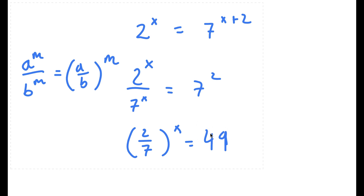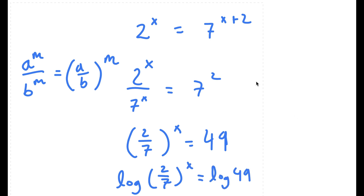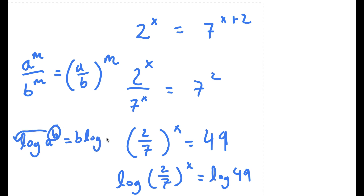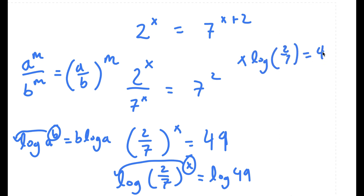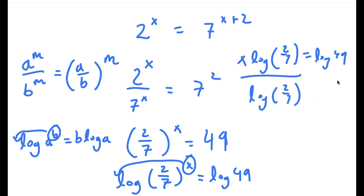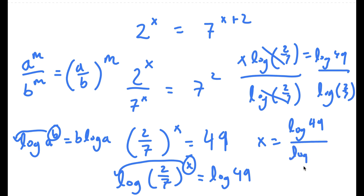So now to solve this, I'm going to take the log on both sides. So now I have log of (2 over 7) to the power of x is equal to log 49. If I have something in the form log a to the power of b, I can move the exponent b to the front, so this equals b times log a. So log of (2/7) to the power of x becomes x times log(2/7) equals log 49. Dividing both sides by log(2/7), I'm left with x is equal to log 49 over log(2/7). So this is my answer.